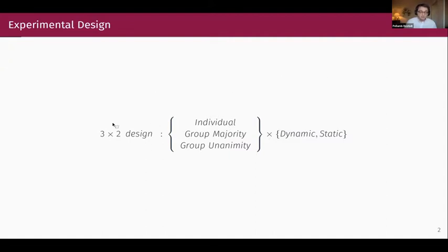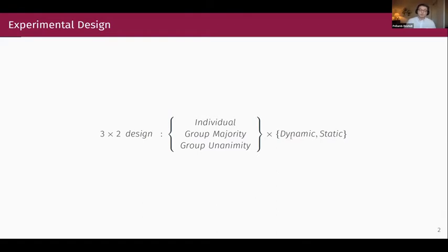We have a 3×2 design in which we vary the setting between a dynamic one — where information arrives sequentially and decisions are made over time — and a static one — where information arrives all at once and only afterwards are decisions made. We're also interested to see how these different mechanisms interact with different institutions, which is why we have a design in which individuals alone make decisions, groups make decisions under majority rule, and groups make decisions under unanimity.